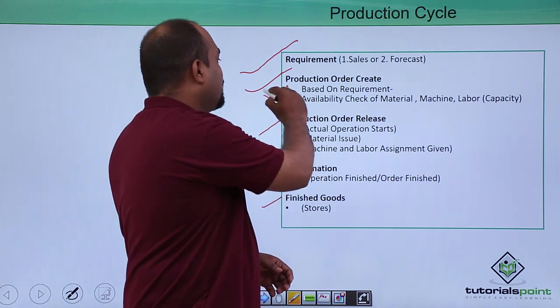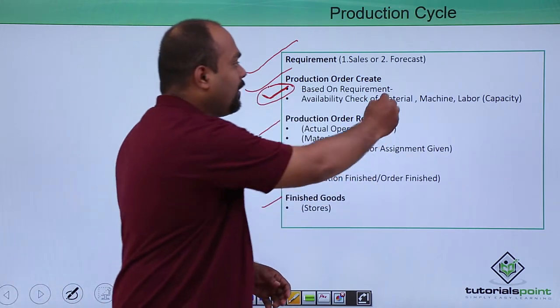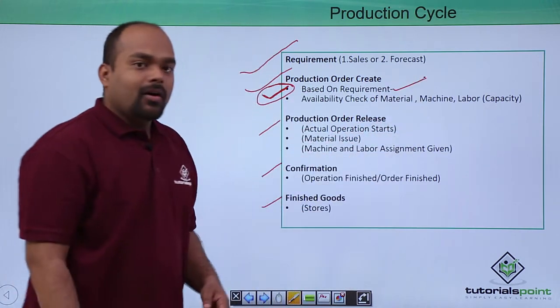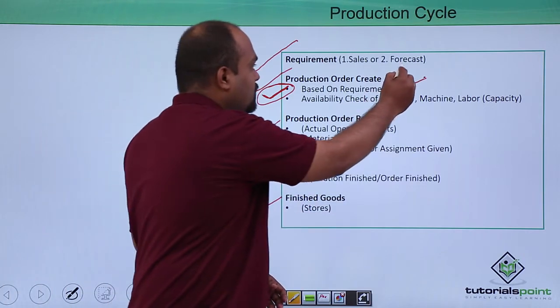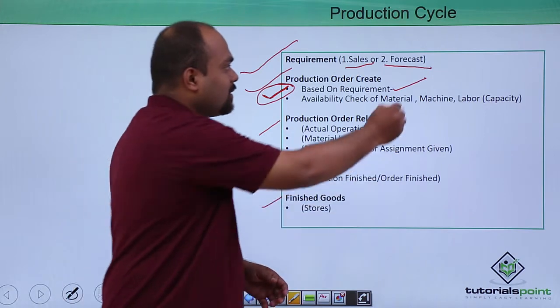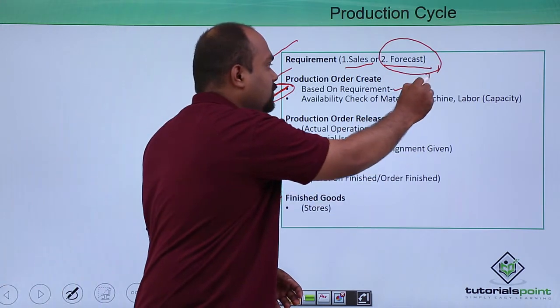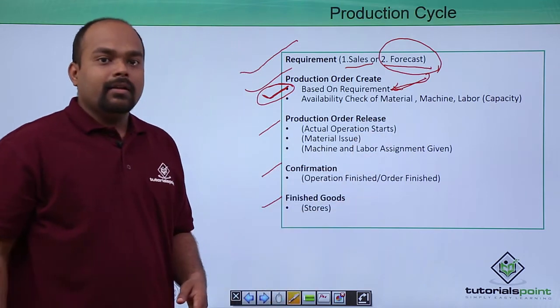In production order create, if in between you want to change some base quantities according to the customer, the plan order, or the forecasting, you change by the plan, then you are required to change the production order. Then how will it change?